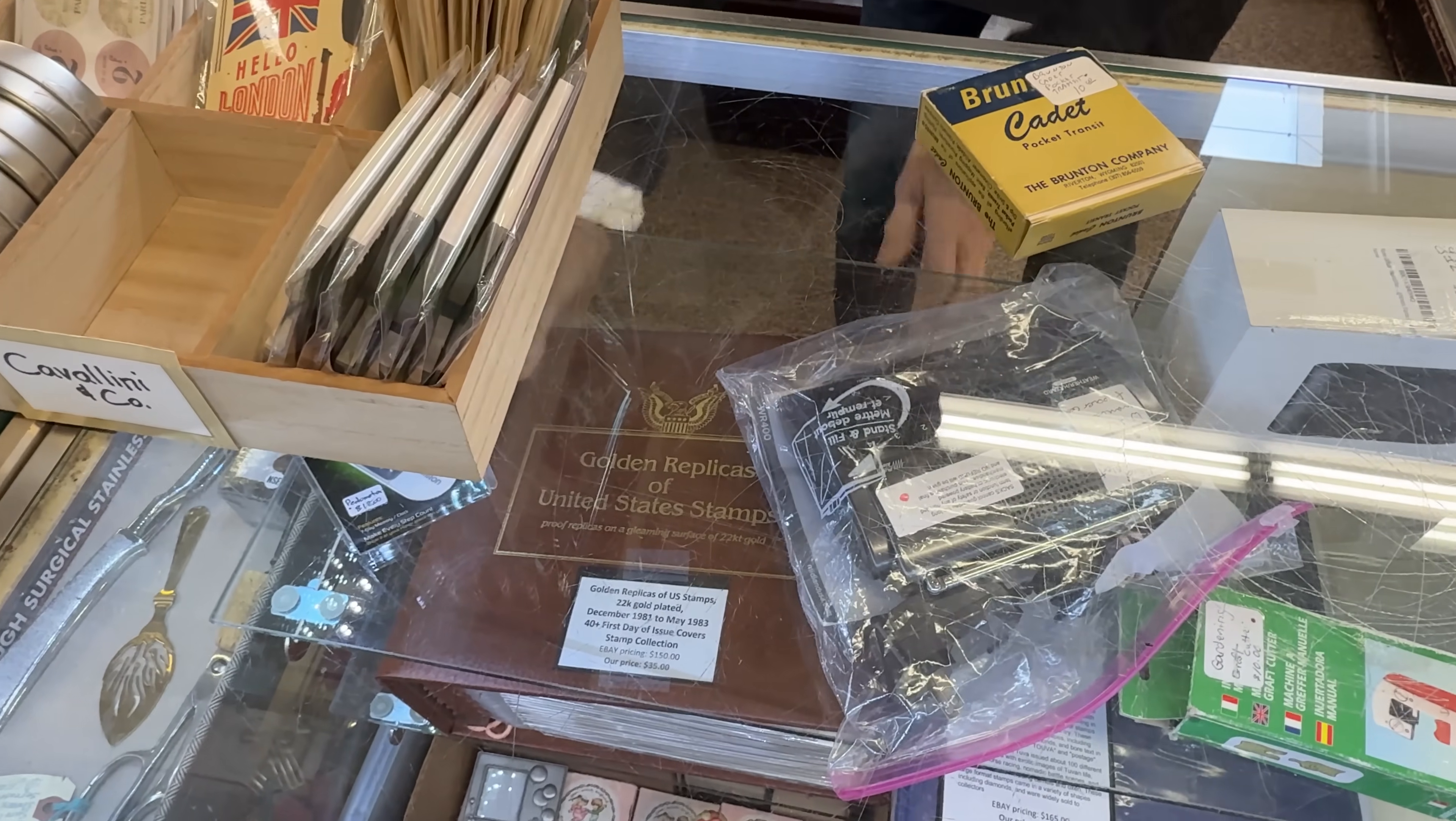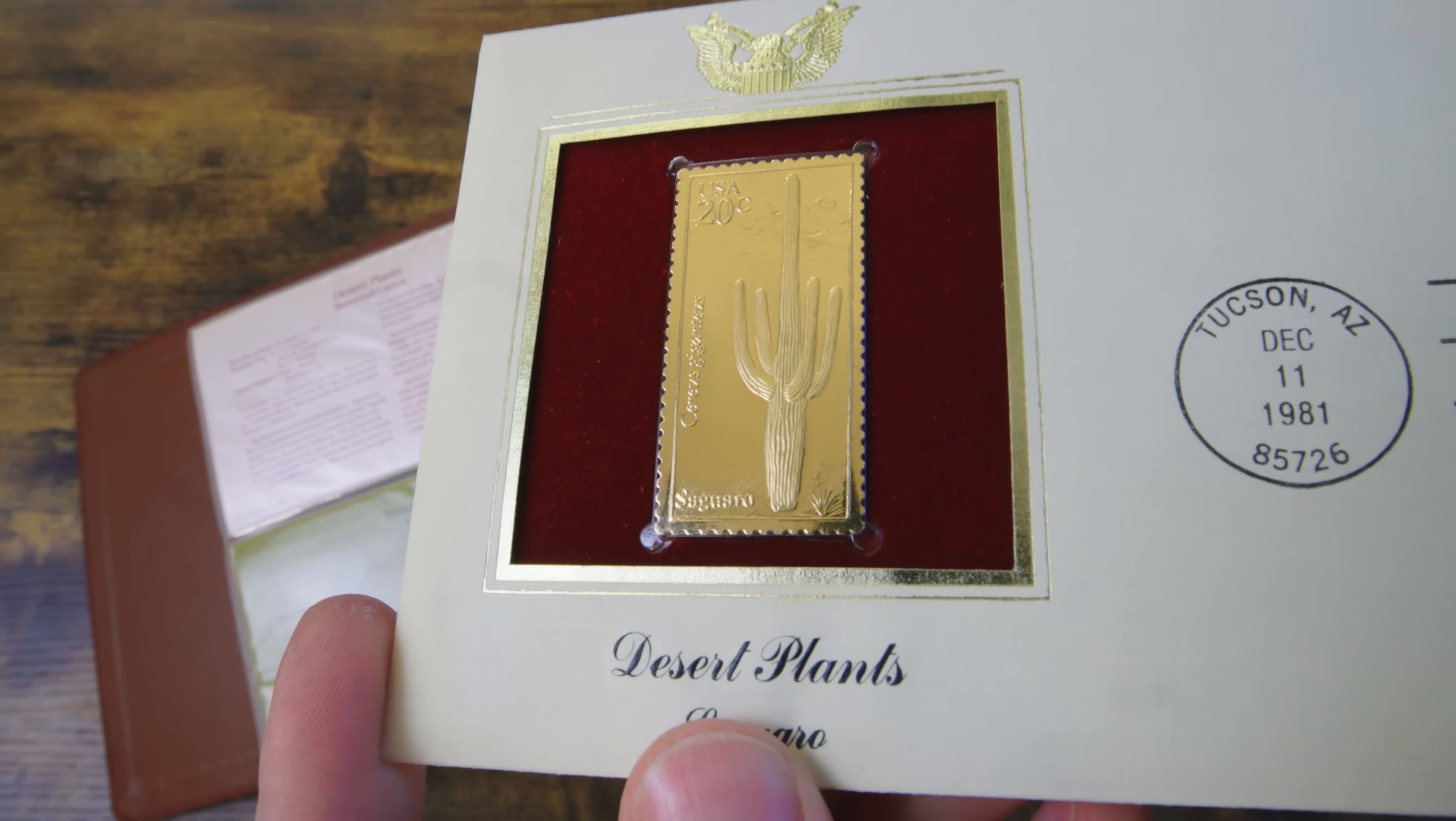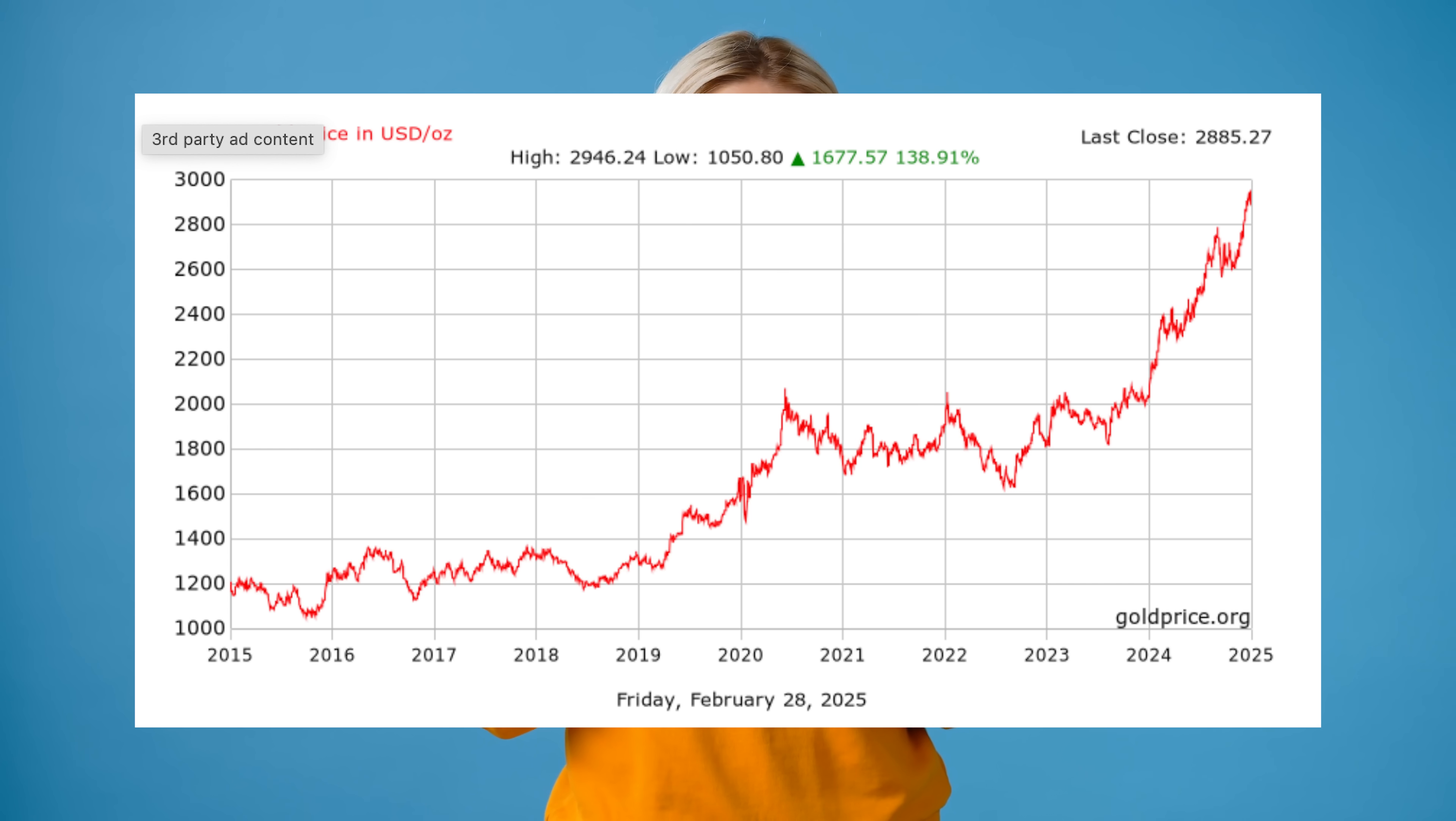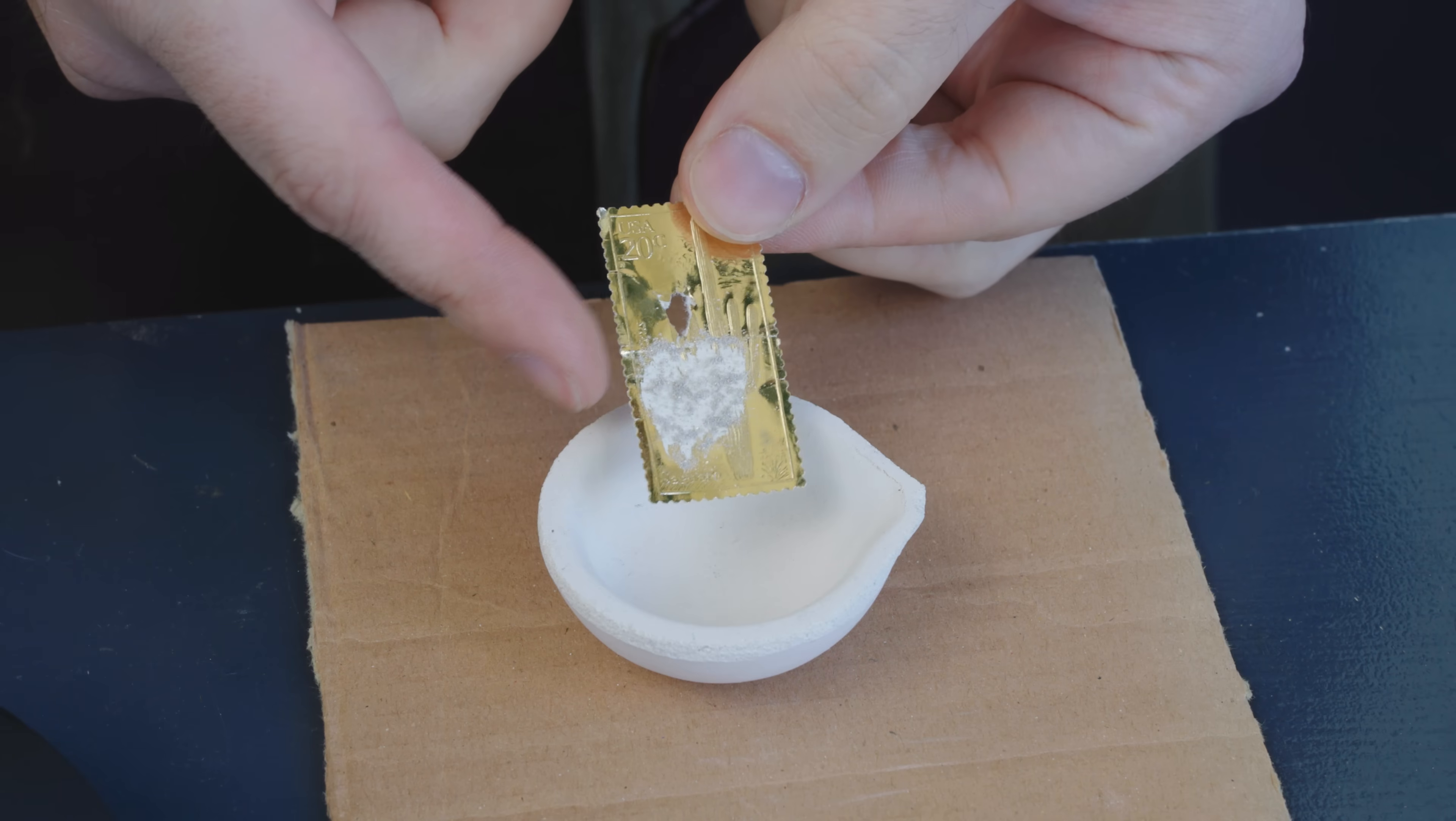Imagine this scenario. You go inside a thrift store and you come across this big book of stamps. Now these aren't just any normal stamps. These stamps have a gleaming surface of 22 karat gold. Now you might be thinking to yourself, did I just strike it rich? Like gold is almost $3,000 an ounce right now. It's at an all-time high. Is there some way I can get the gold off of these stamps and profit? Well that's exactly what I'm going to try to find out in this video.